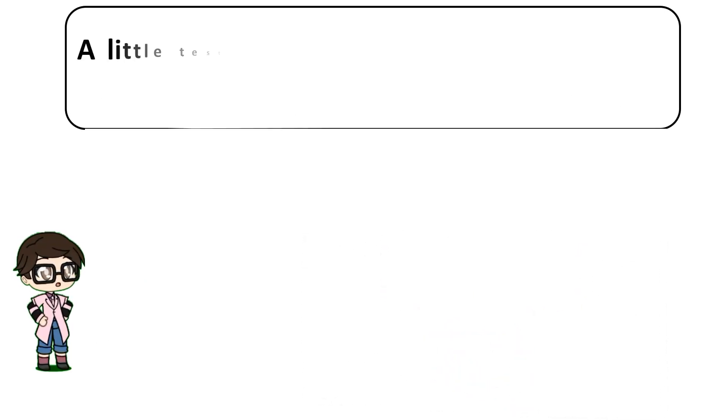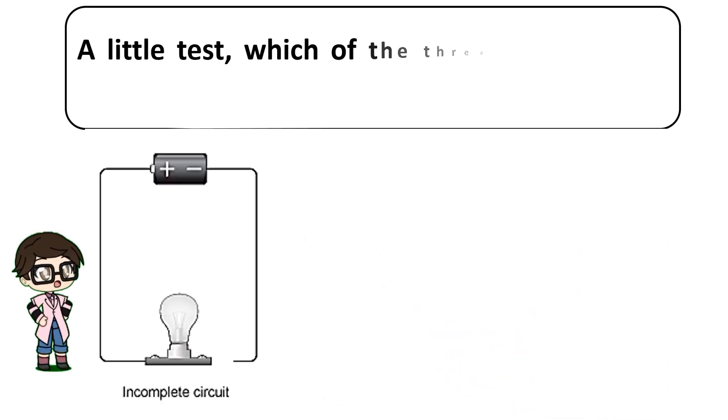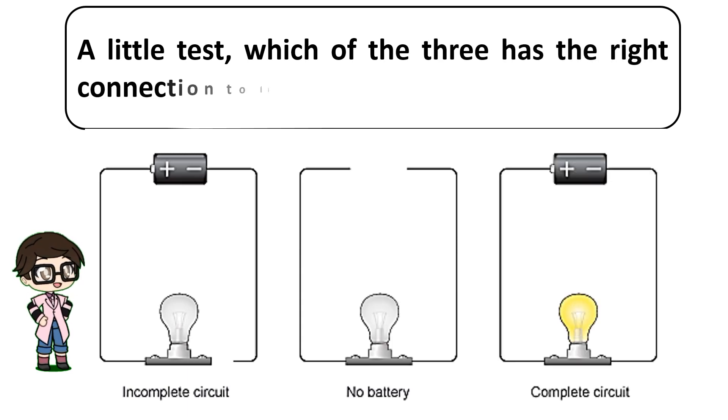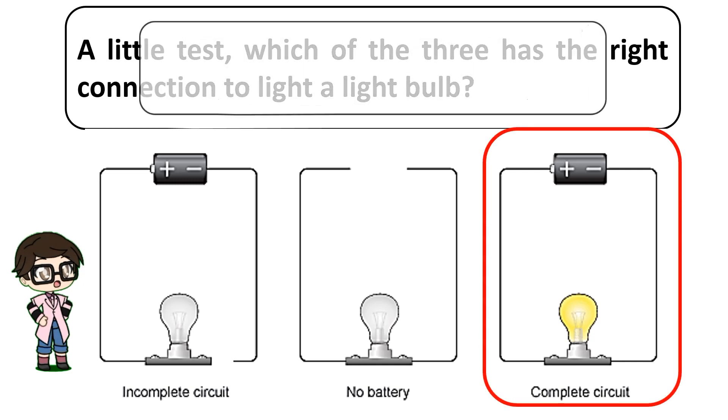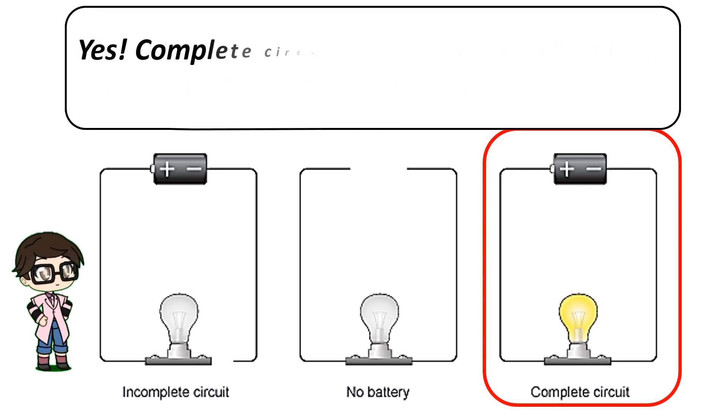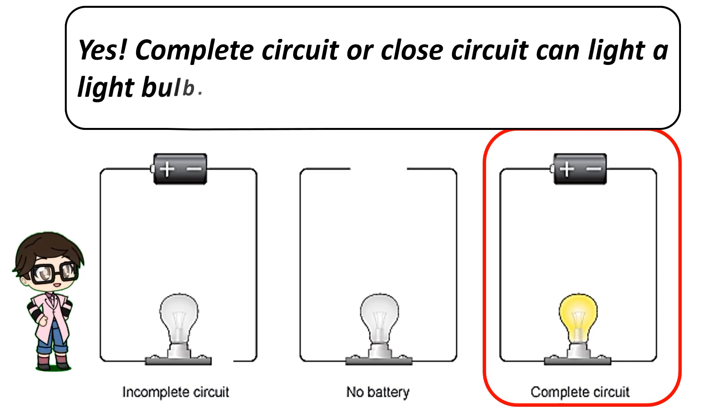A little test. Which of the three has the right connection to light a light bulb? Yes, complete circuit or closed circuit can light a light bulb.